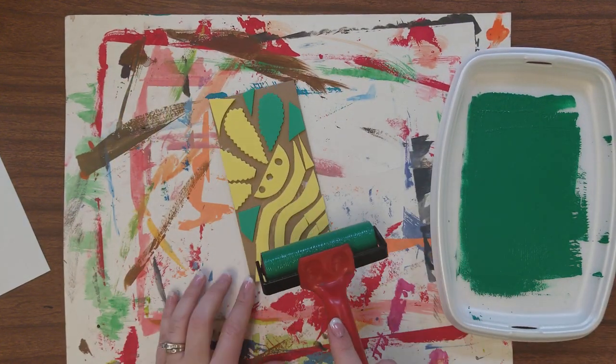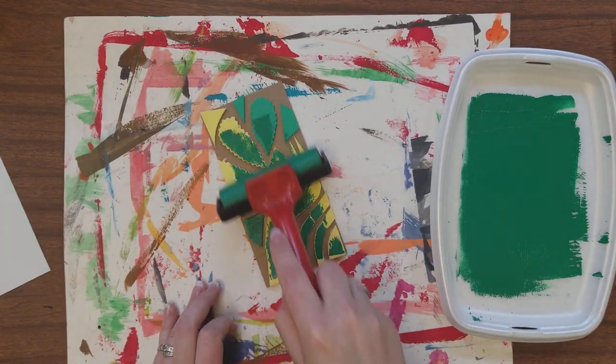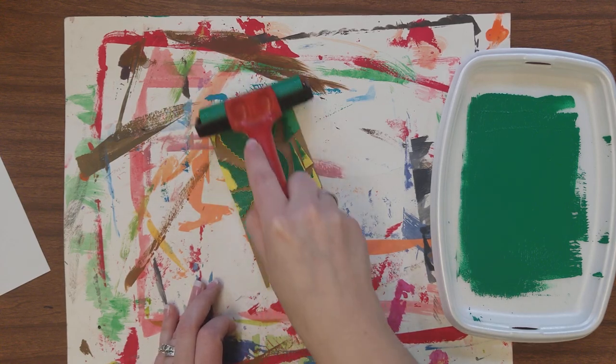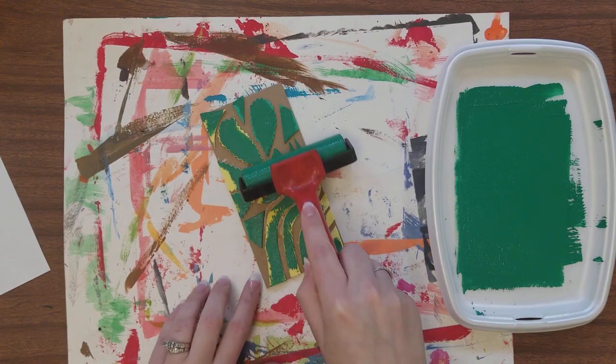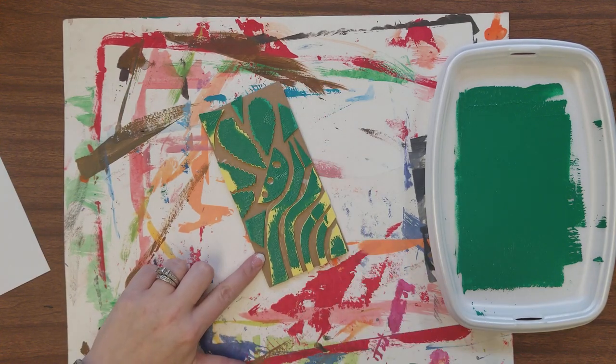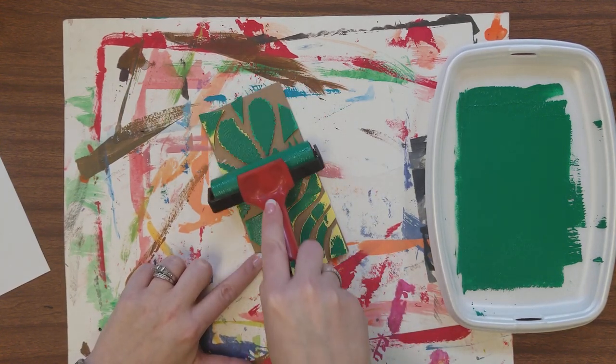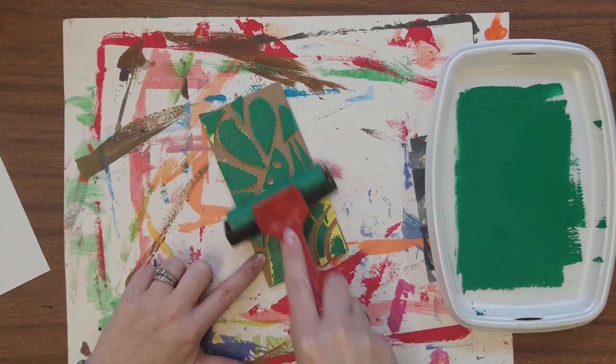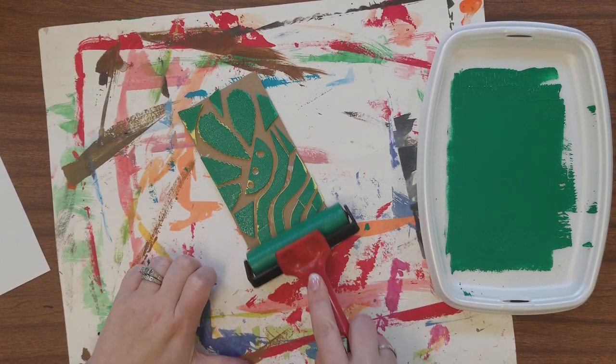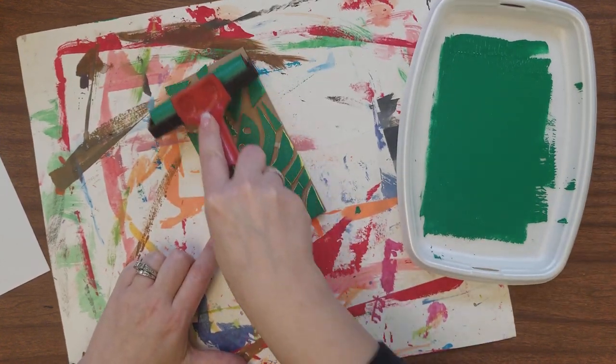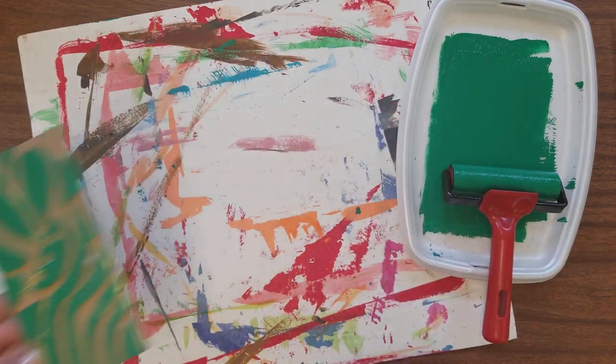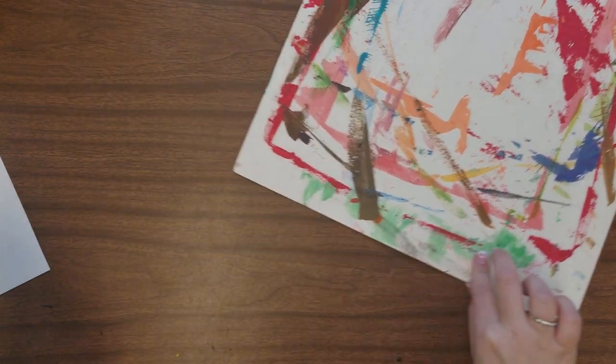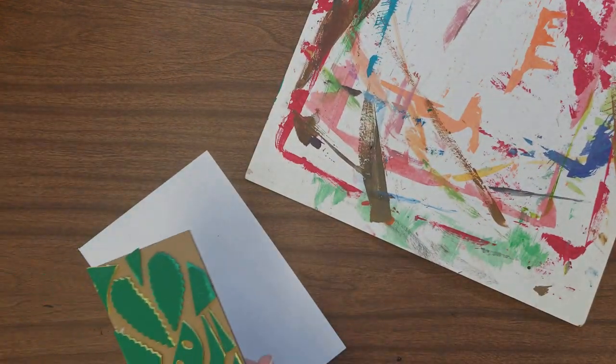And then over your placemat, you'll roll the brayer on top of your collagraph. Inking up if you need more. If you have room, you could put a finger down on the cardboard edge. And then you want to maybe push these materials aside, because you want to make sure that you don't have any ink in your workspace when you do this step.